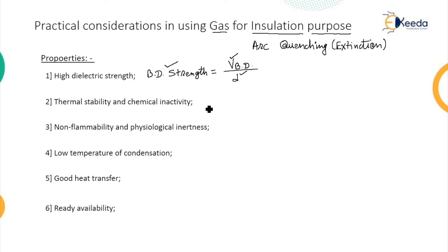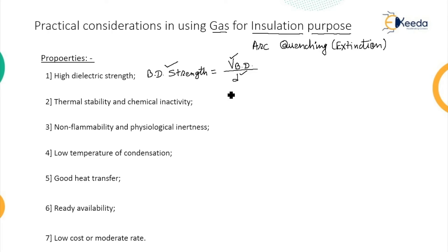That particular gas should be readily available whenever it is required for the application or device. The last property is low cost or moderate rate — whenever there is a need to purchase the gas, it should be available at a low or moderate cost. These properties should be present in gases practically considered for application. Not all properties need to be present, but the maximum number of properties must be there.